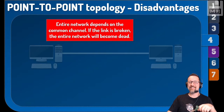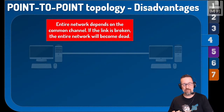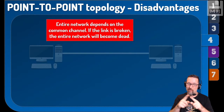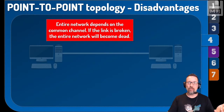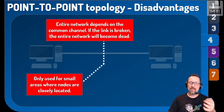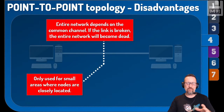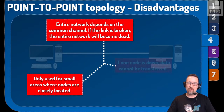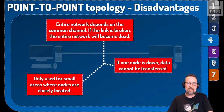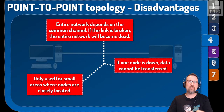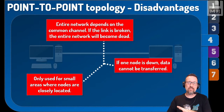Some disadvantages of point-to-point topology: if the link between the two points is broken, the whole network is dead. It is only suitable where nodes are closely located, such as within a small office. And if one node goes down, you cannot transfer data any longer — so pause on the pictures and see where the advantages and disadvantages fit in.